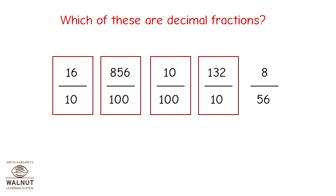So four fractions are decimal fractions: 16 upon 10, 856 upon 100, 10 upon 100, and 132 upon 10.